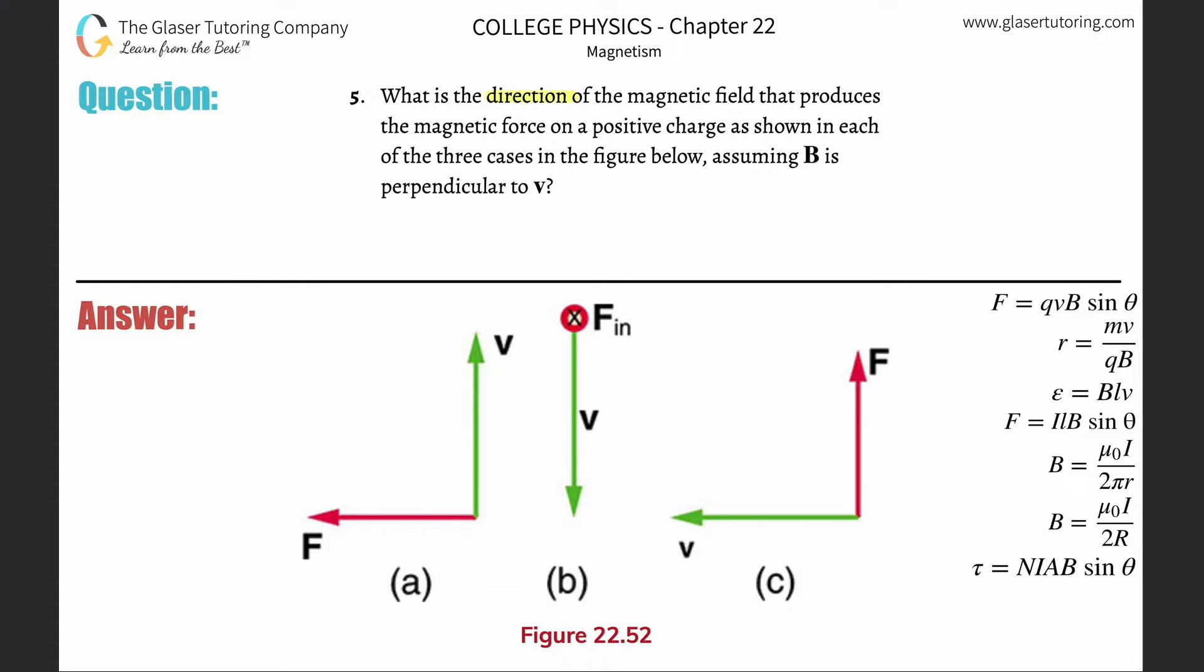Number five: What is the direction of the magnetic field that produces the magnetic force on a positive charge as shown in each of the three cases in the figure below, assuming B is perpendicular to the velocity?